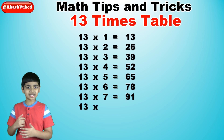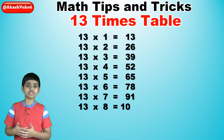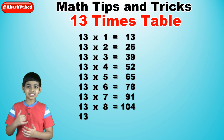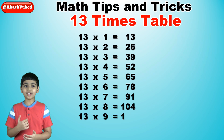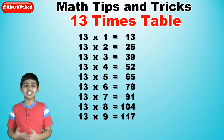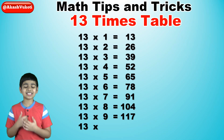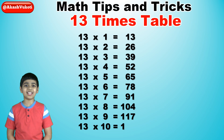13 times 7 is 91. 13 times 8 is 104. 13 times 9 is 117. And finally, 13 times 10 is 130.